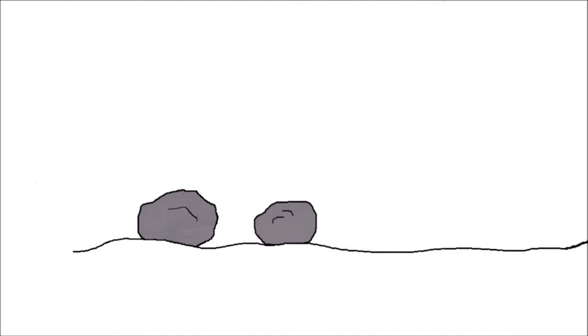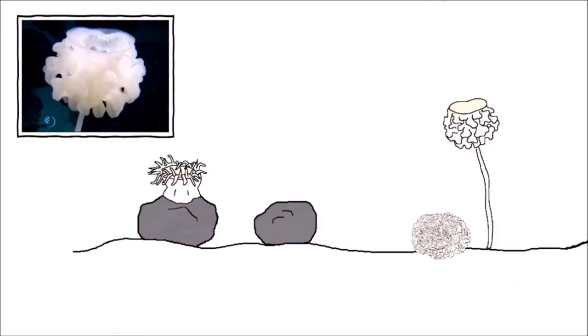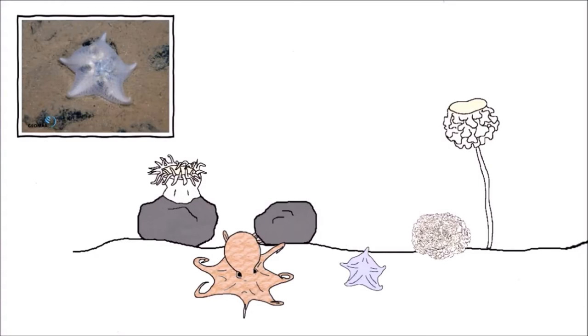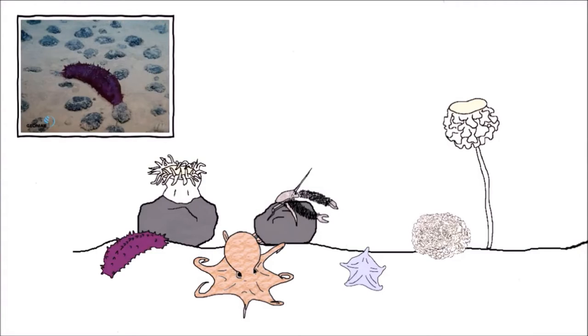For example, on the nodules, you can find anemones, sponges and all kinds of coral growing on the hard substrate. An anemone sits on one of the nodules, and a sponge and a white coral appear next to it. Around them, octopuses, sea stars, or crabs make their way over the muddy sediment and rocks. Even purple sea slugs. The sketch is extended by an octopus, a sea star, a crab sitting on a nodule, and a bright purple sea slug. Photos of the animals appear as Amelie mentions them.